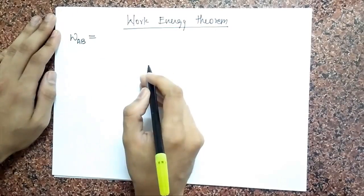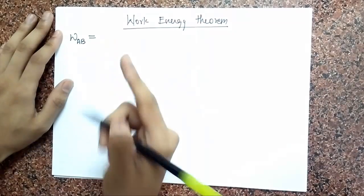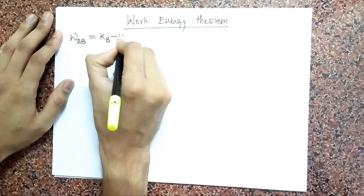then that work done on that object by all the forces is going to change its kinetic energy. So it is going to be KB minus KA.